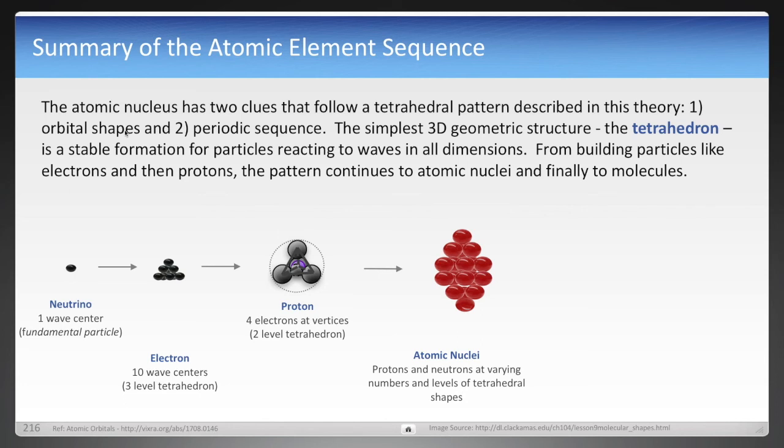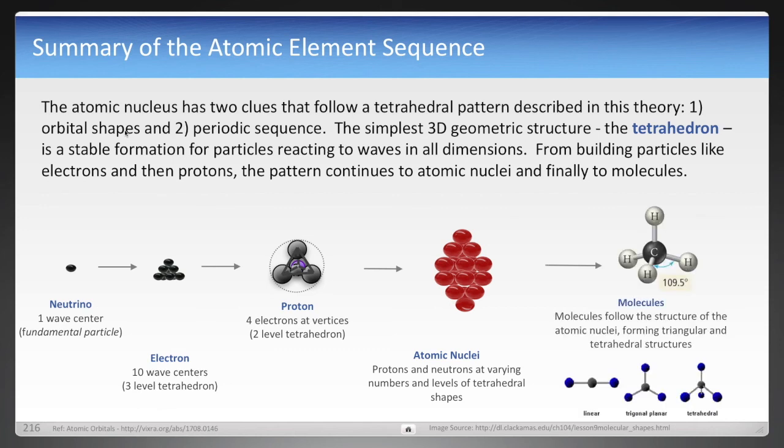But it's also observed in molecules today, linear trigonal planar tetrahedral structures of molecules. And this can be observed. And so if you think about molecules, molecules are just inheriting the properties from atomic nuclei, which are forming the same tetrahedron that protons and electrons are forming, all with the fundamental rule of minimizing wave amplitude in all directions and trying to be placed on the nodes of standing waves.